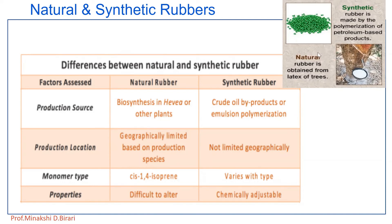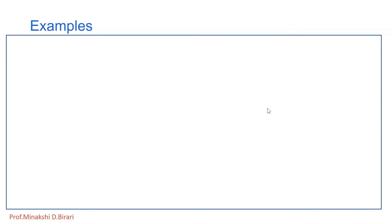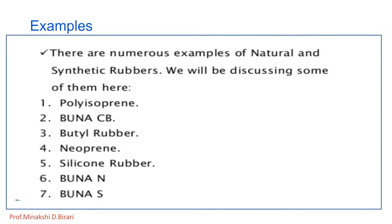Natural rubber is obtained from the latex of trees, and synthetic rubber is made by the polymerization of petroleum-based products. There are numerous examples of both: polyisoprene, Buna-CB, butyl rubber, neoprene, silicone rubber, Buna-N, and Buna-S.